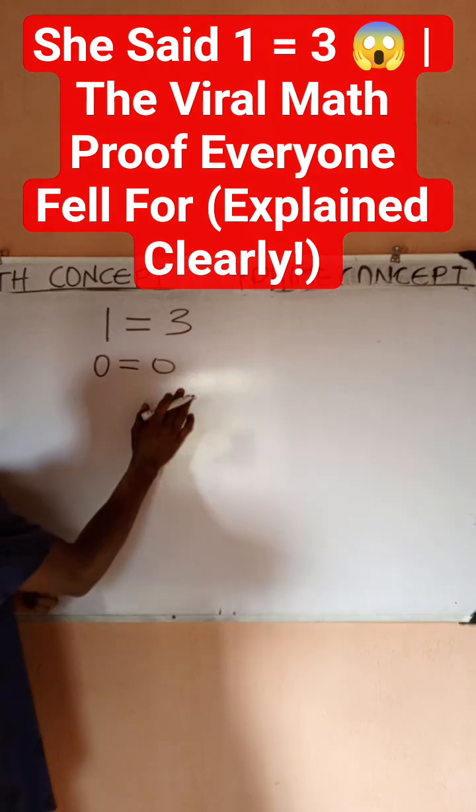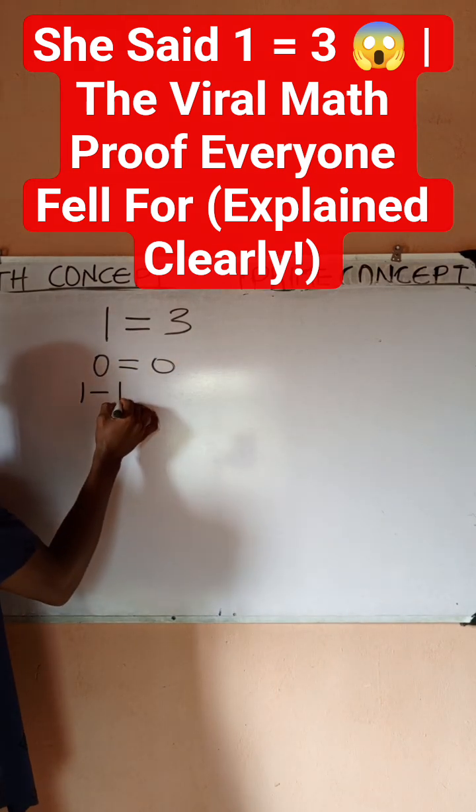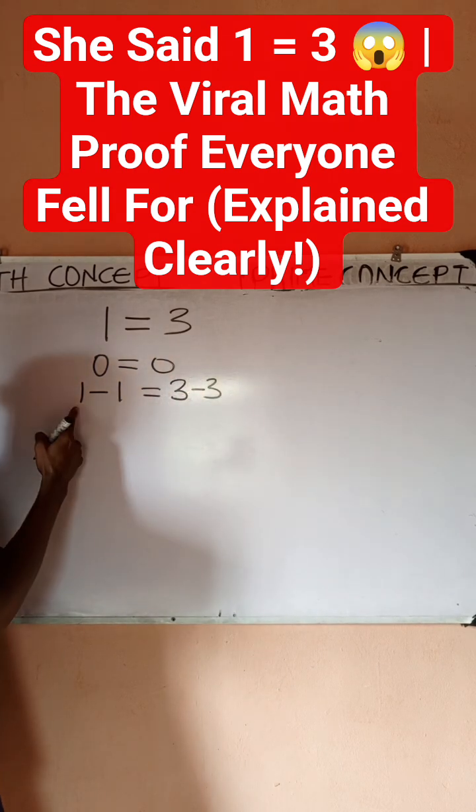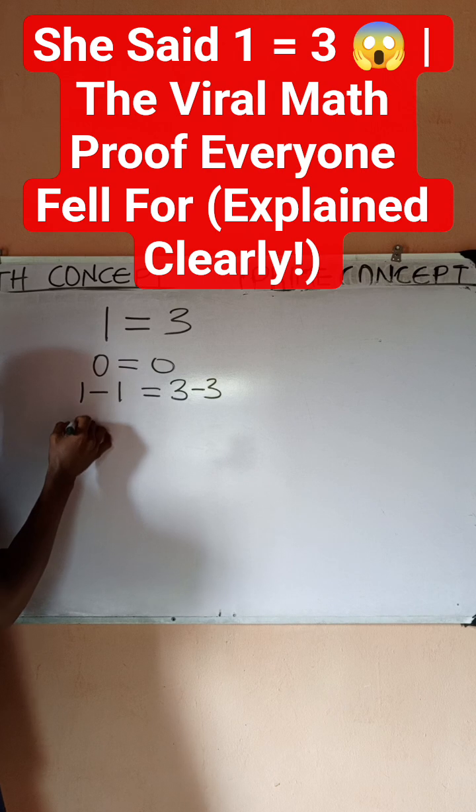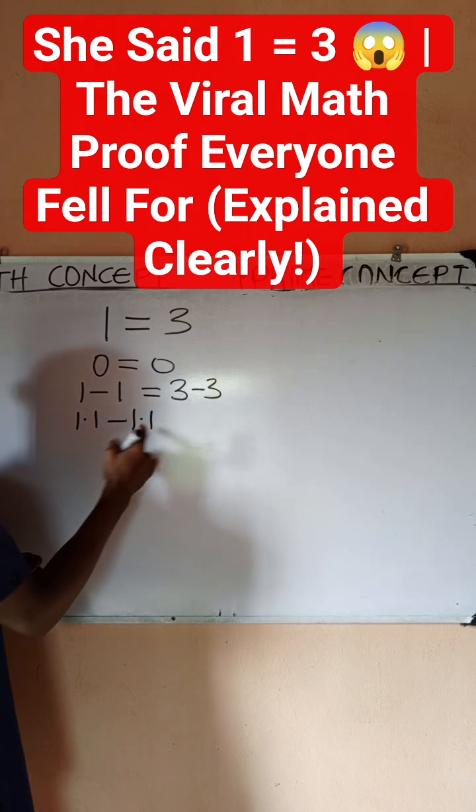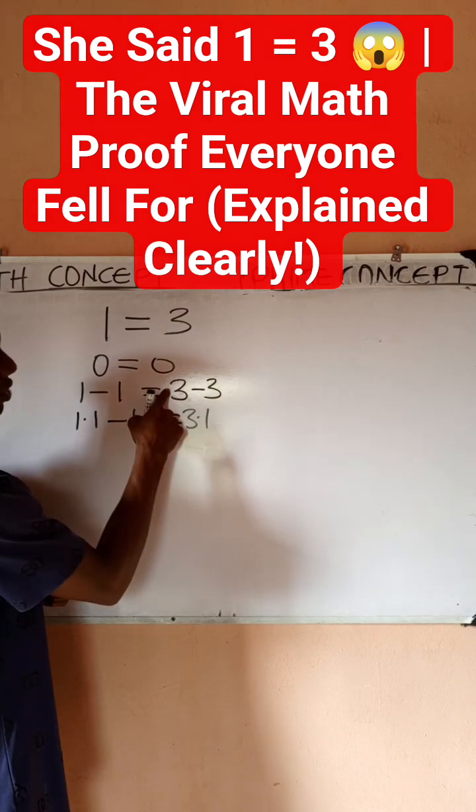Now she started by saying let's set 0 to be equal to 0, which is true. Then she said 0 is same as 1 minus 1, then 0 is still same as 3 minus 3. So I can come here and multiply 1 by itself: 1 times 1 is 1, minus 1 times 1 is also 1. Same thing, 3 times 1 is actually still 3, minus 3 times 1 is actually still 3.